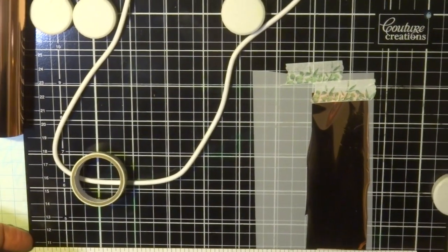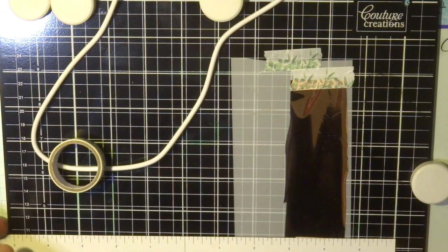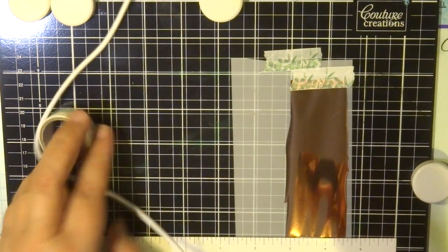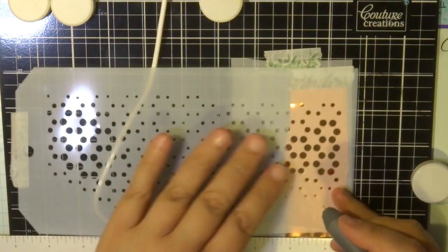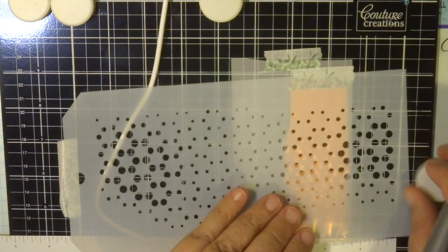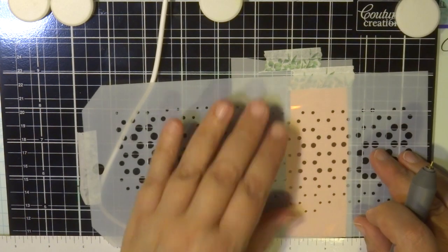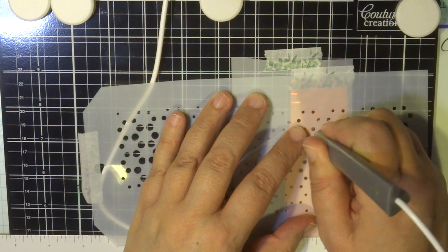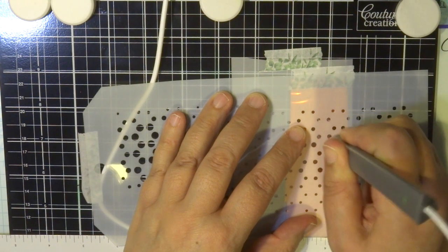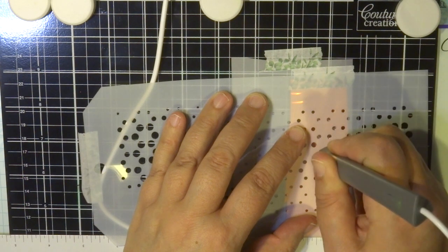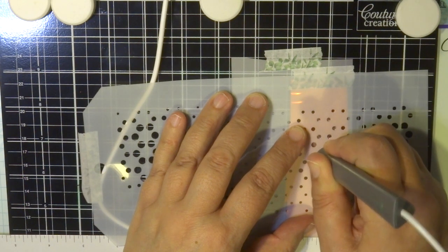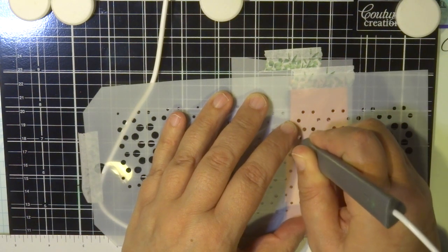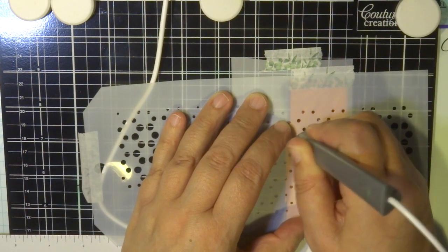I've also used it on vellum and also here I have translucent alcohol ink paper. It's part of our collection with the alcohol inks. And again I'm just using the stencil to create some doodling. And also you can write with it freehand. So exactly the same thing. It will transfer onto vellum, onto translucent paper, onto mirror board, any type of cardboard surface. Works fabulous with this hot foiling pen.